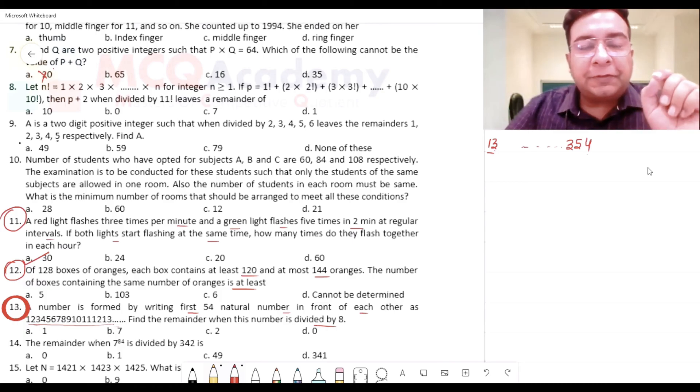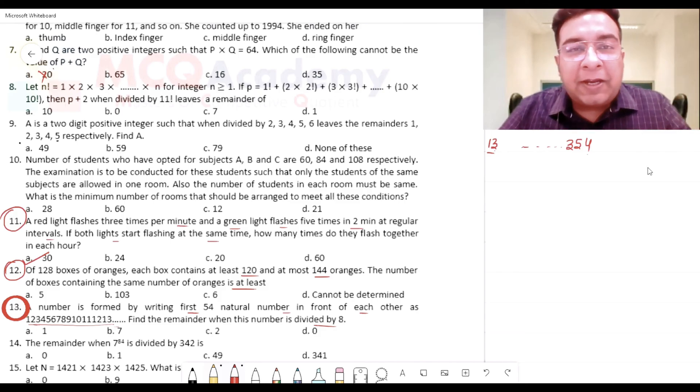So, 354 divided by 8, and the remainder will be the remainder. That is the remainder that you will get when you divide this entire number by 8. So, you have divided by 8.